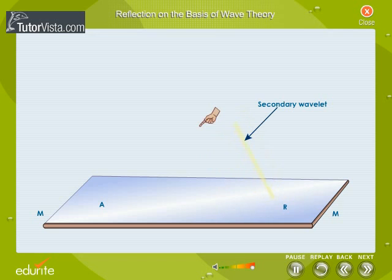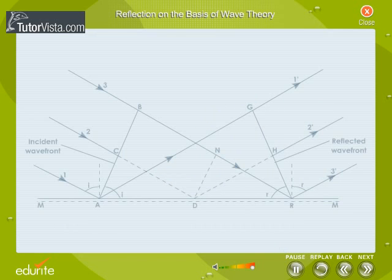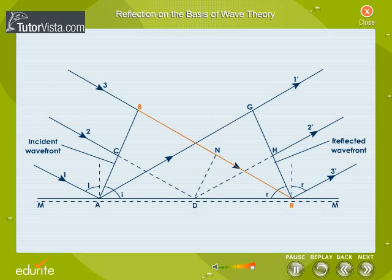These secondary wavelets travel in the same medium. By the time B reaches R, the wavelet from A gets time BR by V to grow and produces a spherical wavefront of radius AG. That is, the radius is equal to the distance travelled in this time.